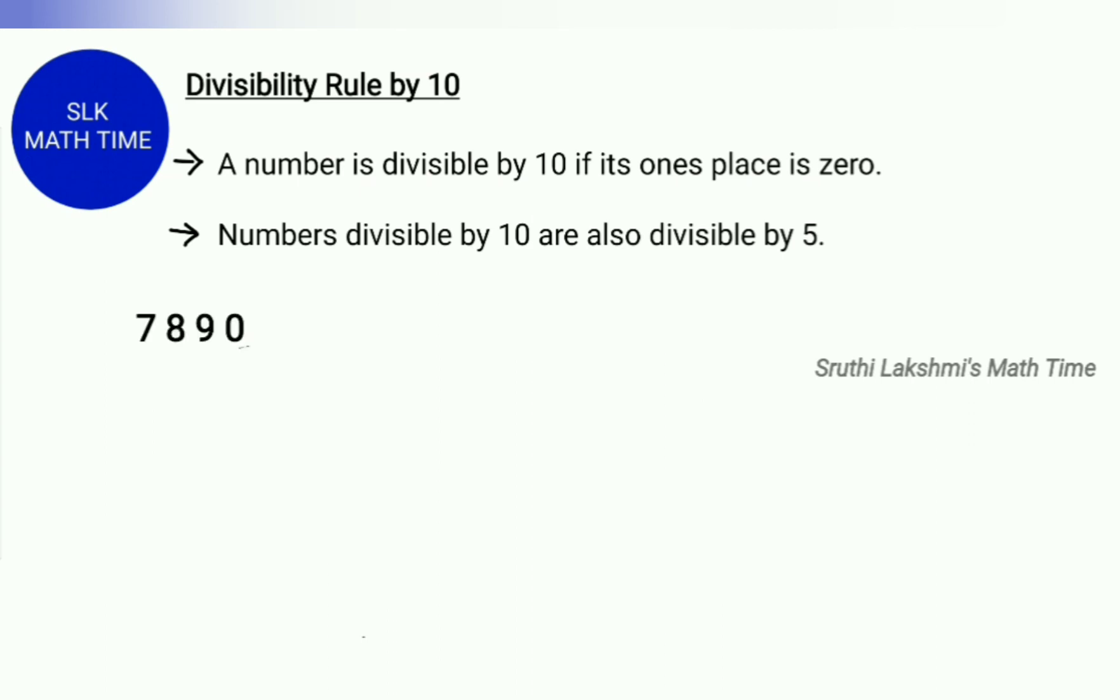Let's see this example: 7,890. To check if 7,890 is divisible by 10, we look at the ones place. It has to be 0.